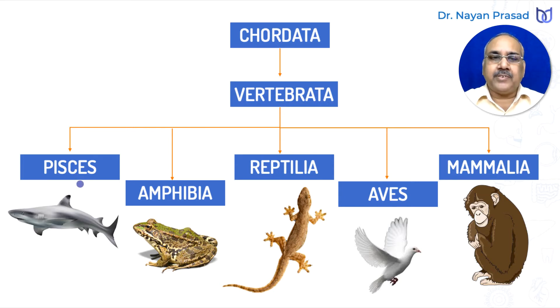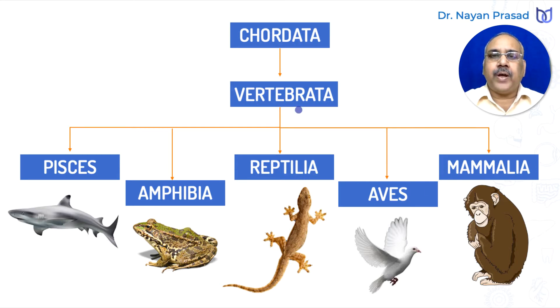The five groups are Pisces, Amphibia, Reptilia, Aves, and Mammalia. Thus we see five major groups under subphylum Vertebrata.